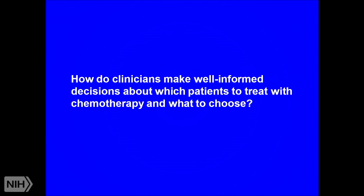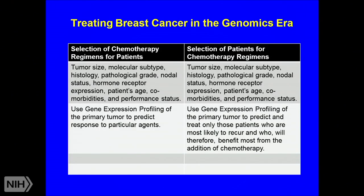How do clinicians make well-informed decisions about which patients to treat with chemotherapy? Treating patients in the genomics era has changed quite a bit. Not only do we select chemotherapy regimens for patients, we also select patients for chemotherapy regimens. Beyond clinical indicators, we use gene expression profiling of the primary tumor to predict response to particular agents and to identify only those patients most likely to recur — and therefore benefit from additional chemotherapy. These assays are approved by insurances and widely used.